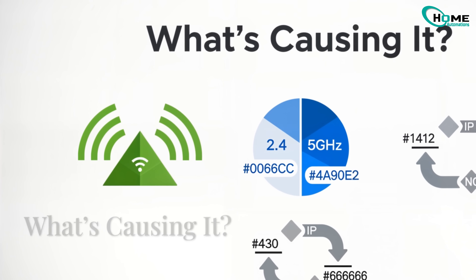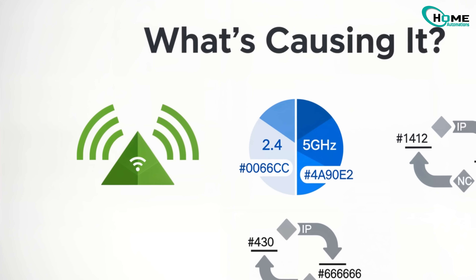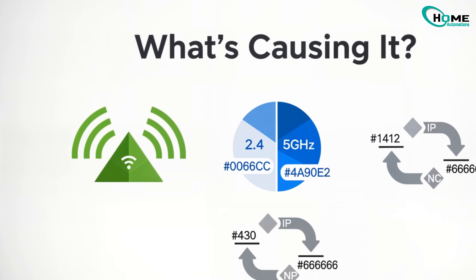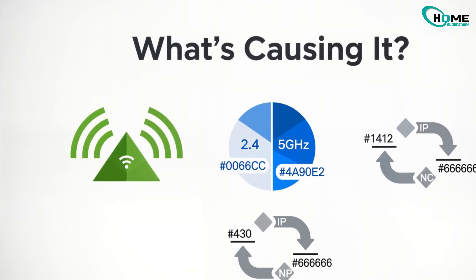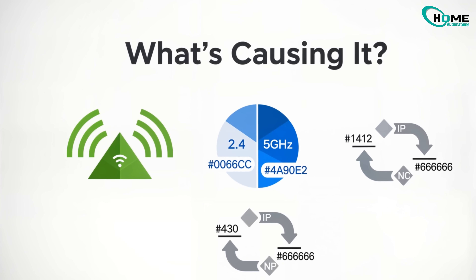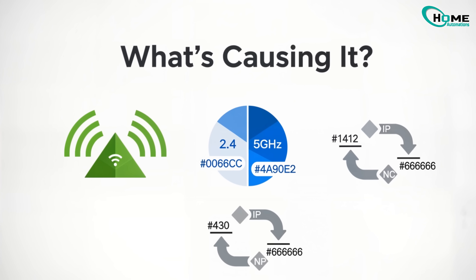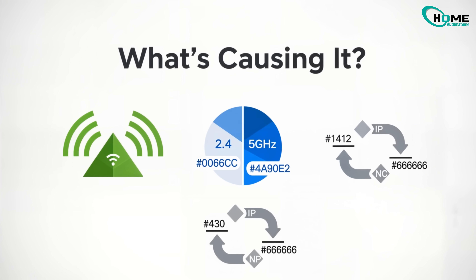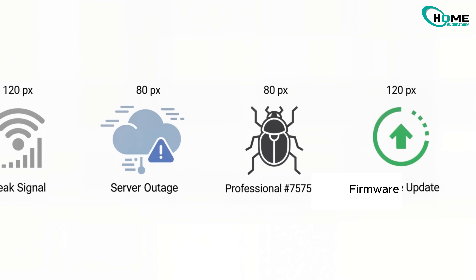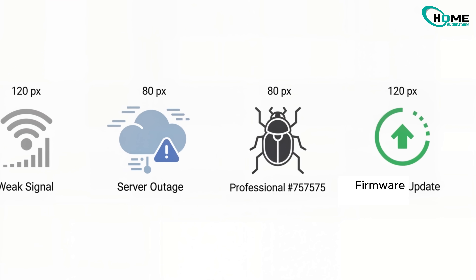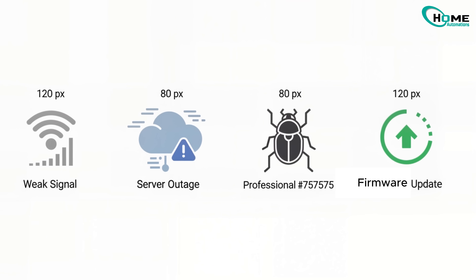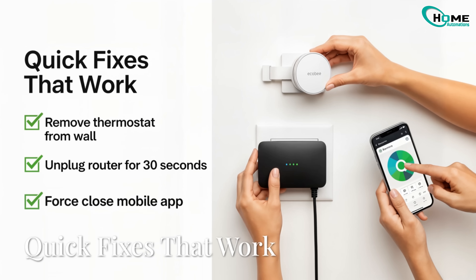Here's why this usually happens: your Wi-Fi might be unstable, especially if your router splits into 2.4GHz and 5GHz bands — Ecobee only works with 2.4GHz. Your IP address may have changed, confusing the connection. Weak signals or router bugs can knock your device offline. Sometimes Ecobee's servers go down for a bit, or it could be app bugs or outdated firmware.